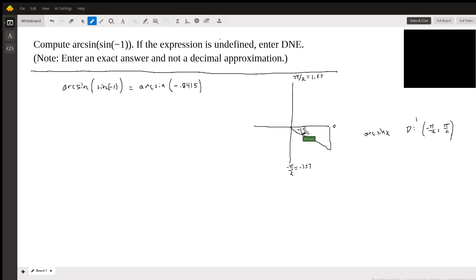Because our angle of interest is in the domain, we can just say that the arc sine, the angle whose sine is negative 0.8415, it's just negative one radians. And that's all there is to it.